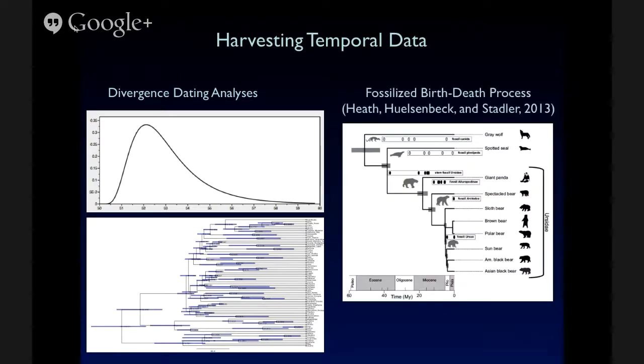And there are also newer methods like the fossilized birth-death process, which Tracy Heath talked about in the last phylogenic seminar. And this method uses the entire fossil record of a group to marginalize over fossil attachment points on the cladogram. And so this can use a little bit more than just the oldest fossil of each clade to help get at time. And these are really interesting methods and really important methods and a lot of work being done with these methods right now.